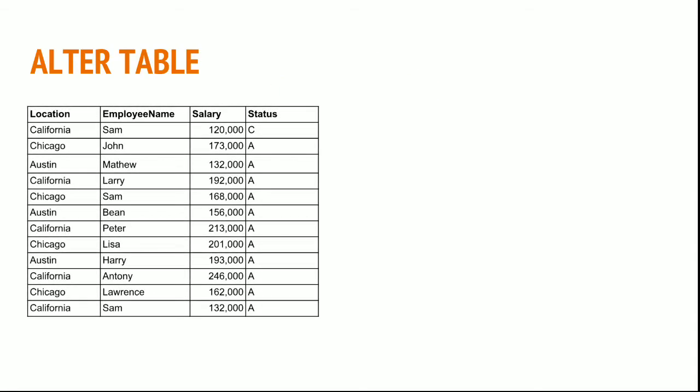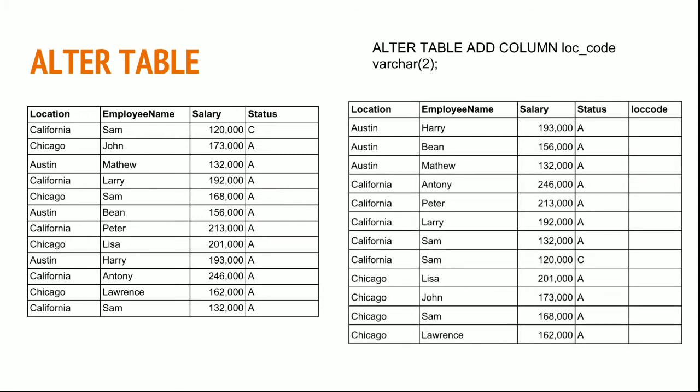You can alter a table and add extra columns or drop unnecessary columns using the ALTER TABLE statement. You can even rename the columns. I have a table and I need to add a location code column. I can use the following statement: ALTER TABLE ADD COLUMN location_code, along with the data type of that column. This will add an extra column with nulls.